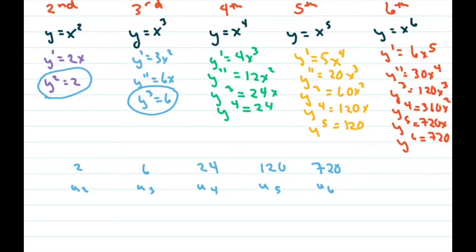I'm going to look and see what we multiply here. I know 2 times 3 is 6. 6 times 4 is 24. 24 times 5 is 120. And 120 times 6 is 720.